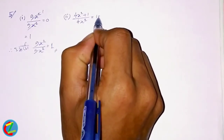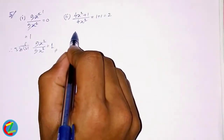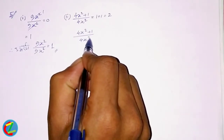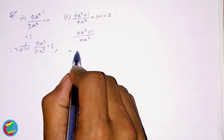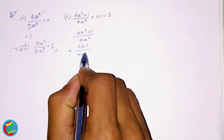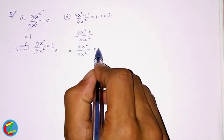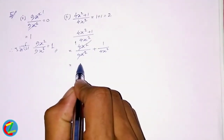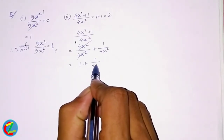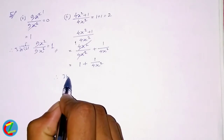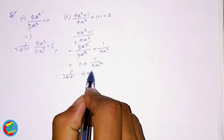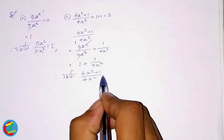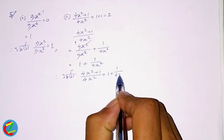4x² plus 1 divided by 4x² is equal to 1 plus 1, which is equal to 2. 1 plus 1 is equal to 2. So 4x² plus 1 divided by 4x² is equal to 2. Then 4x² divided by 4x² is equal to 1 plus 1 divided by 4x². So 1 plus 1 divided by 4x² is equal to 1 plus 1 divided by 4x².